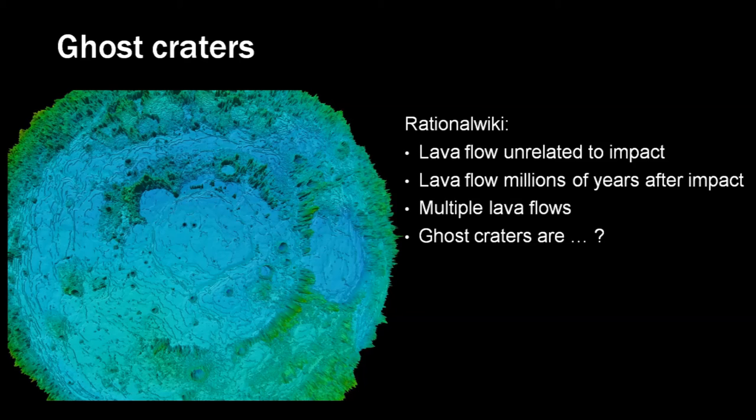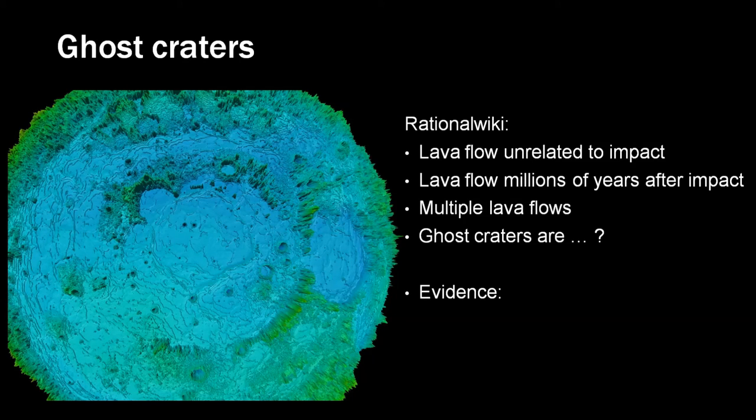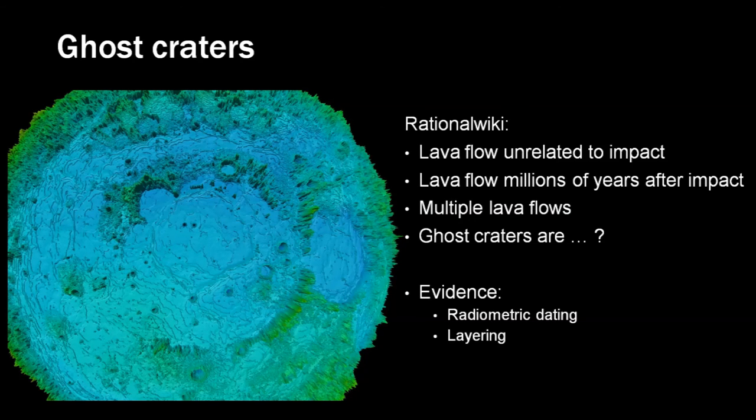When we look at the evidence this conclusion doesn't make sense. How can a lava flow be not related to the impacts? Impacts especially this large generate a lot of heat. How can lava flows be multiple events? It is one large ocean of basalt that poured out of the crater. In case of multiple eruptions we would see that clearly on this image. There would be multiple plates of basalt and not reaching far away from the crater. So what is their evidence? Radiometric dating and layering.